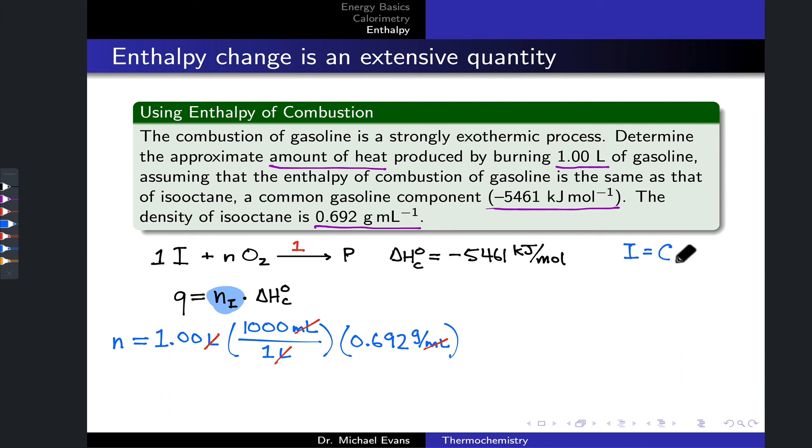It's going to have eight carbons and it will have 18 hydrogens. You could look this up very easily. I just know this because of a hydrocarbon formula: 2n plus 2 is the number of hydrogens for eight carbons in a fully saturated hydrocarbon like isooctane. We'll find the molar mass or molecular weight based on that formula.